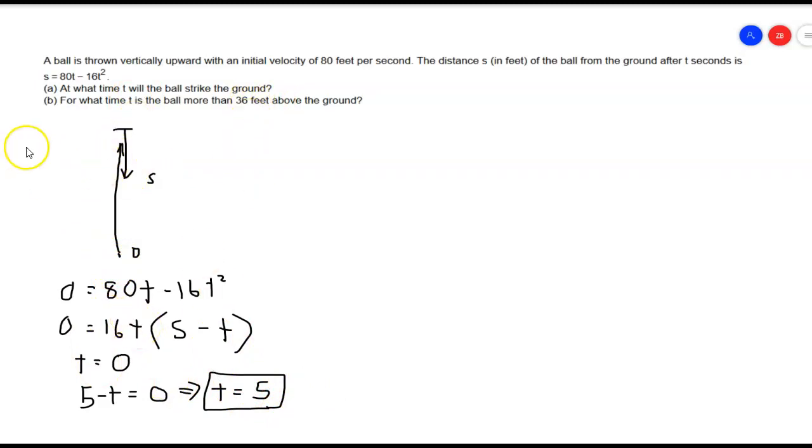The next problem says, for what time t is the ball more than 36 feet above the ground? At some point, we have 36 feet for s, and we want to know the two times—the first time when it initially hits 36, then it'll be above it, and then the second time when it's passing 36 going down. We're going to use a strict inequality.